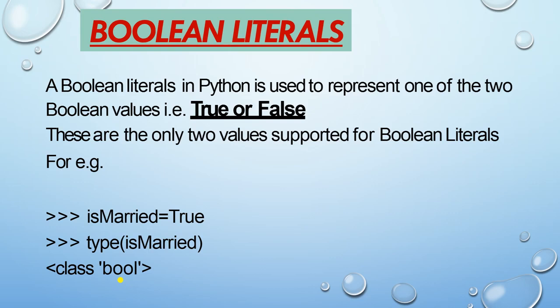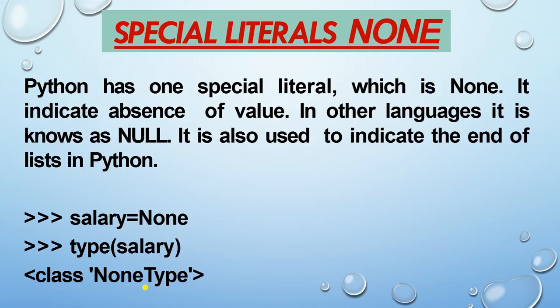Next is boolean literal — it always gives either True or False. For example, if you write 'is_married = True' and check its type using type(is_married), it will give you class bool. This is how you can check whether it is a boolean literal. Next is the special literal None — it indicates that a particular variable does not contain anything. In other languages it is known as null, and it is also used to indicate the end of a list in Python. For example, salary = None; type(salary) gives NoneType.